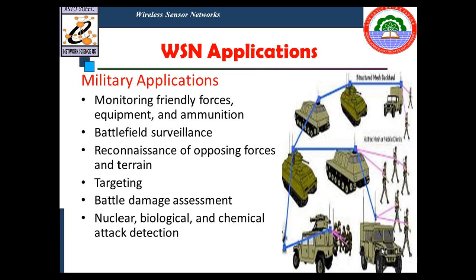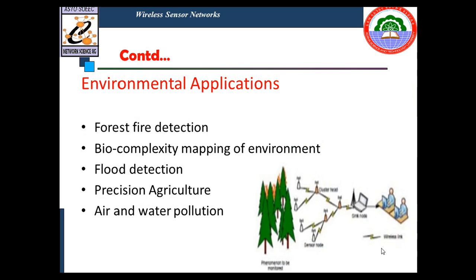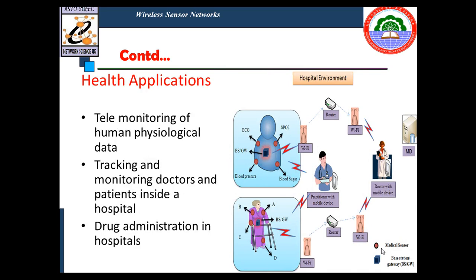The first application is military: sensors are mainly used for battlefield surveillance, targeting opponents, and nuclear, biological, and chemical attack detection. The second application is environmental: forest fire detection, flood detection, precision agriculture, and air and water pollution monitoring can all be done using sensor networks.